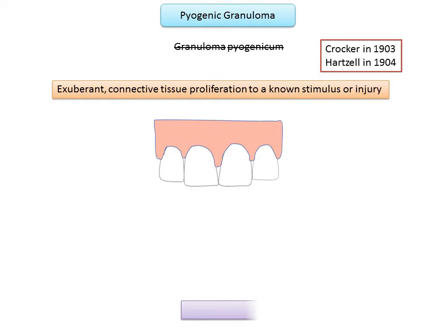Various etiologic factors have been proposed. This tissue response illustrates the well-known biological principle that any irritant applied to living tissue may act either as a stimulus, as a destructive agent, or as both.